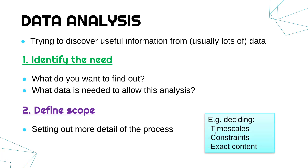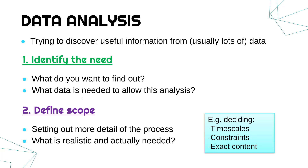These specific details include things like deciding the timescales — when you're going to stop collecting data and when you're going to stop analyzing the data. Things like constraints: a constraint is some limitation, and a big one is often budget, so you might only have so much money to spend. Another constraint might be how many employees you can use as part of this analysis. You might also define the exact content — what data is needed and where it might come from. A key question at this point is figuring out what is realistic and what you actually need.